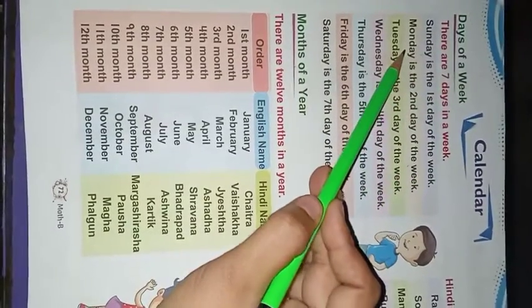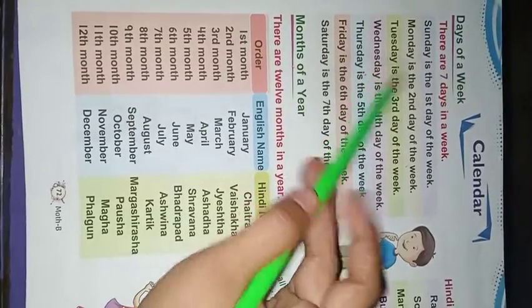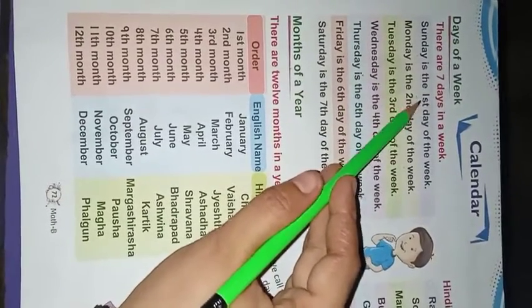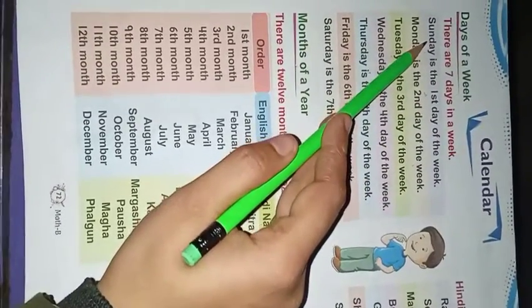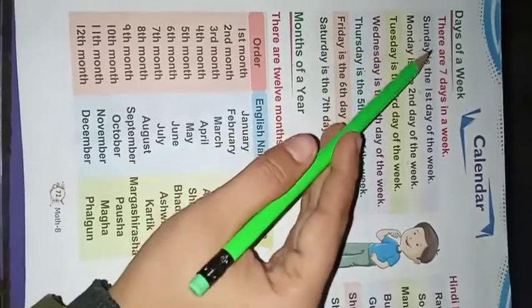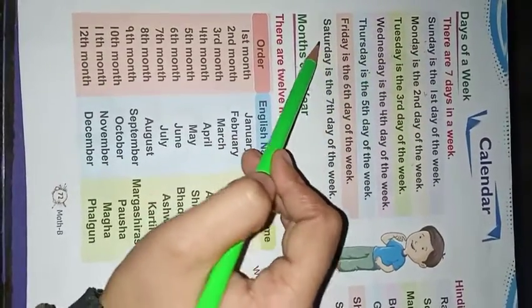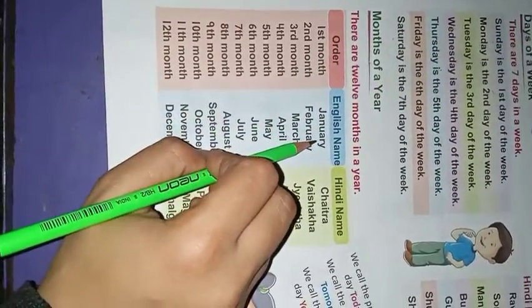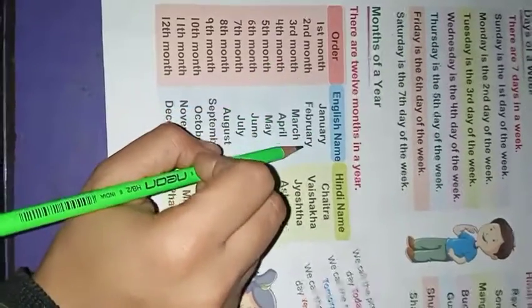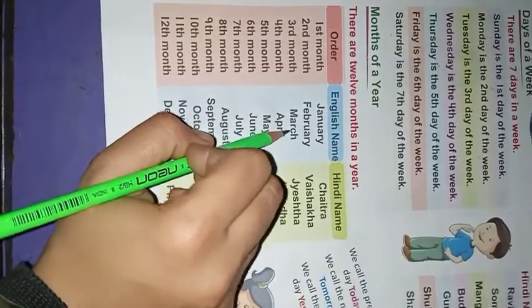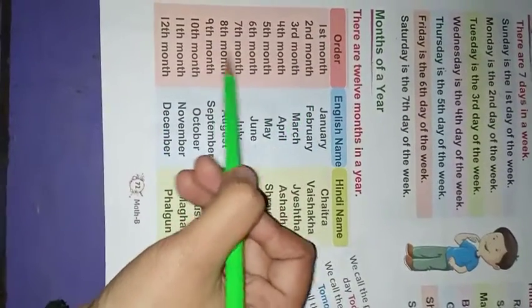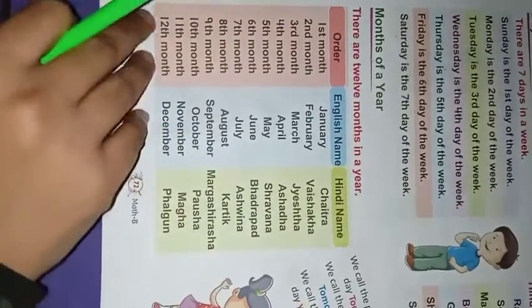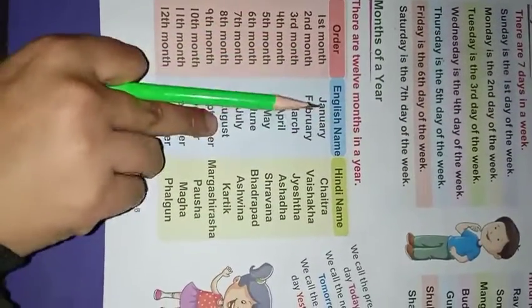So Monday - third day hamara kya hota hai? Tuesday. So you have to learn the position and order. Aap se koi puchega week ka first day koon hota hai, aapko batana hai Sunday. Second day koon sa hota hai - Monday. Toh aapko yeh sequence mein learn karna hai. Similarly, one year mein 12 months hote hain. First month hamara koon sa hota hai - January. Second month - February. Third month - March. So you have to learn the month names with spelling, and also know the order and position, ki kis month pe hamara koon sa position hota hai.